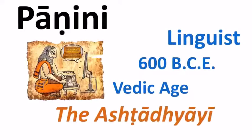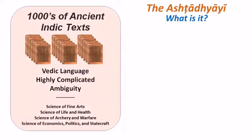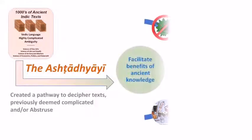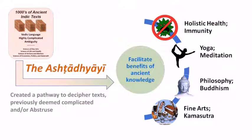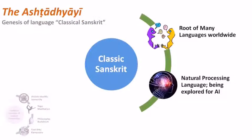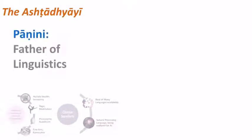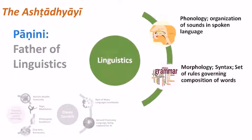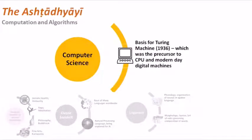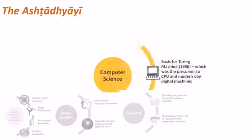Panini is most notable for his work, the Ashtadhyayi. Before Panini, the Indic texts written in the Vedic language were not easily accessible or understood. Panini's Ashtadhyayi codified language grammar into 4,000 sutras, or rules. He created a pathway for deciphering ancient wisdom and made it available for the benefit of mankind. His concepts influence holistic health, meditation, yoga, philosophy, Buddhism, and fine arts. Panini's work marks the start of classical Sanskrit, which is the root of many languages, and is also a potential natural processing language in the field of artificial intelligence. Panini is the father of linguistics — he mapped phonics and incorporated the ideas of morphology to create words. His work is also the basis of the Turing machine, which is a computer that uses a set of rules to reach an answer to complicated problems, and is a precursor of the modern-day CPU.